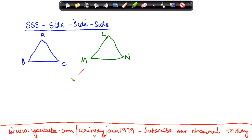Now, the rule is that if three sides of one triangle are equal to the corresponding three sides of the other triangle, then the two triangles are said to be congruent.